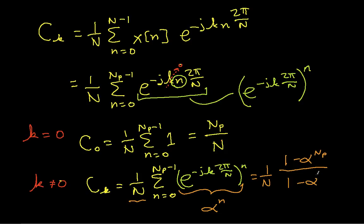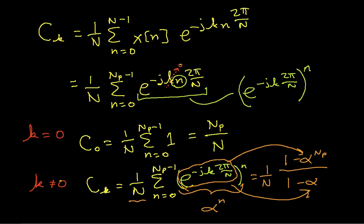The sum of a geometric series gives us 1 over N times (1 minus alpha to the N_p) over (1 minus alpha). That's the result for the sum of a geometric series. All I need to do now is plug in the value of alpha — e to the minus j k 2π over N — into both numerator and denominator.